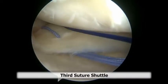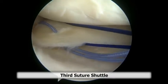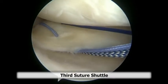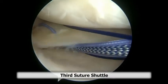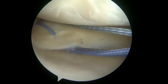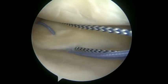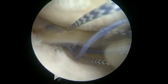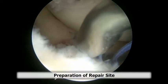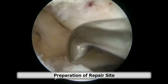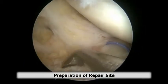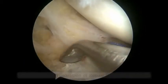A simple stitch will be placed medial to the horizontal mattress in similar fashion using a PDS to shuttle. Next, we use a curette to prepare the repair site and debride any soft tissue.